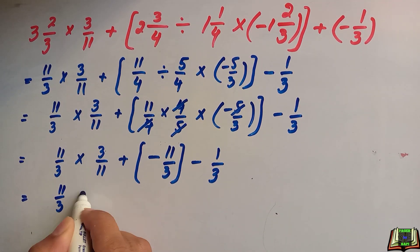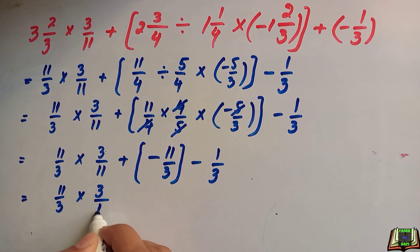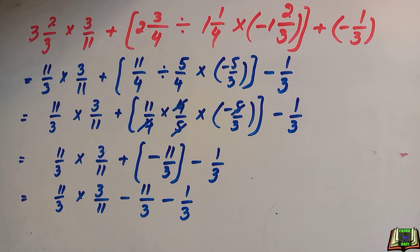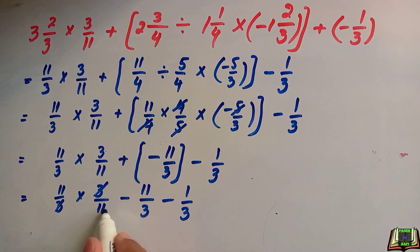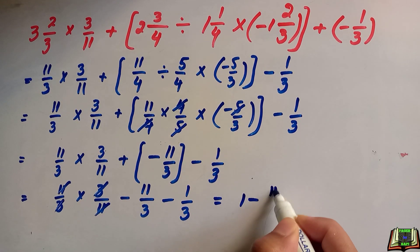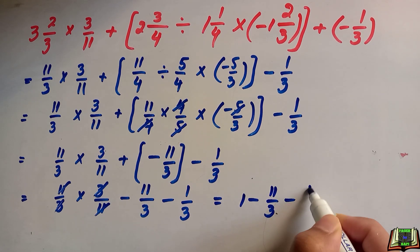In the next step we will solve this multiplication. 3 and 3 will be cancelled out, 11 and 11 cancel out. 1 minus 11 over 3 minus 1 over 3.